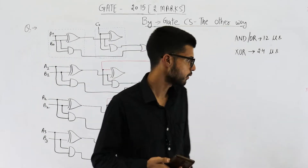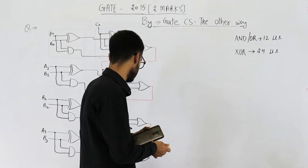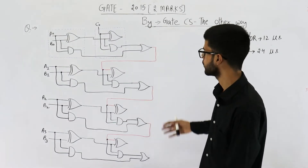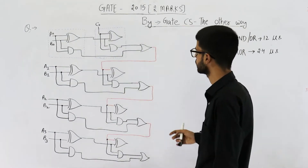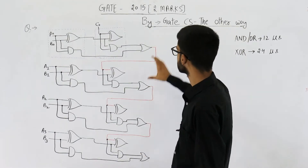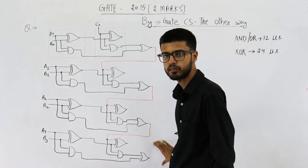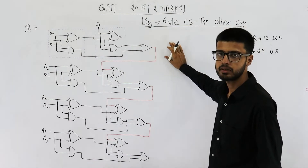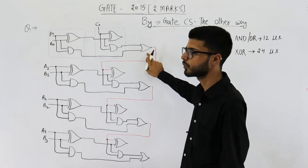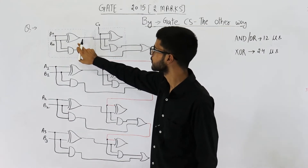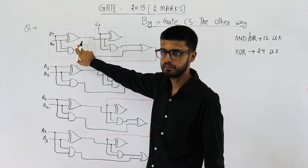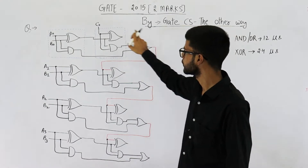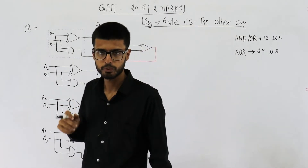We need to find out the total delay of these four full adders. We are implementing a ripple carry adder using four full adders. This is the first full adder, second, third, and fourth. A full adder is implemented using two half adders plus one OR gate. This blue one is a half adder, this one is also a half adder, and we have one OR gate. This entire circuit is a full adder.